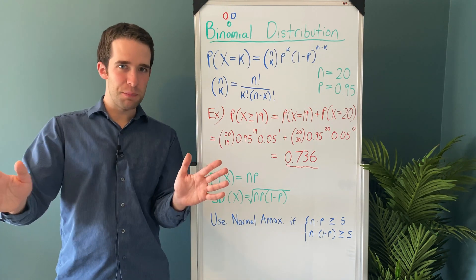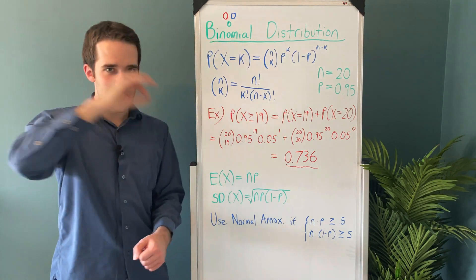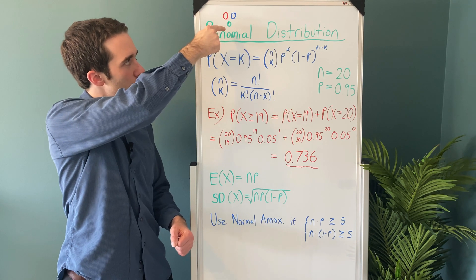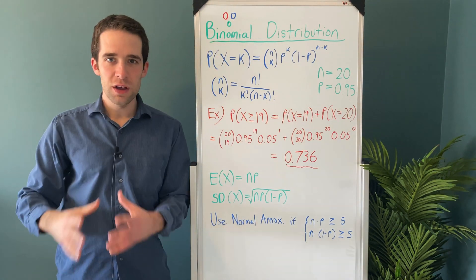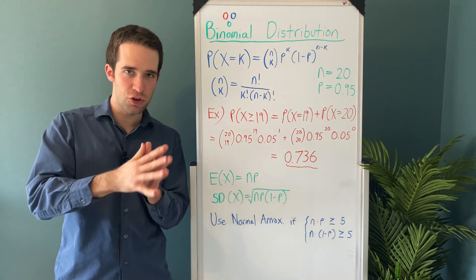So let's just as an example look at 3 choose 2. We have three balls and we want to pick two out of the three. Well, we could pick a red and a green, we could pick a green and a blue, or we could pick the red and the blue. So 3 choose 2 is 3 because there's three different ways to pick two balls.